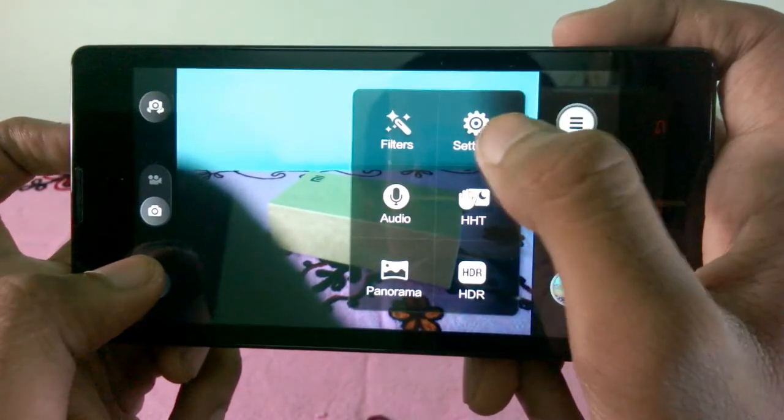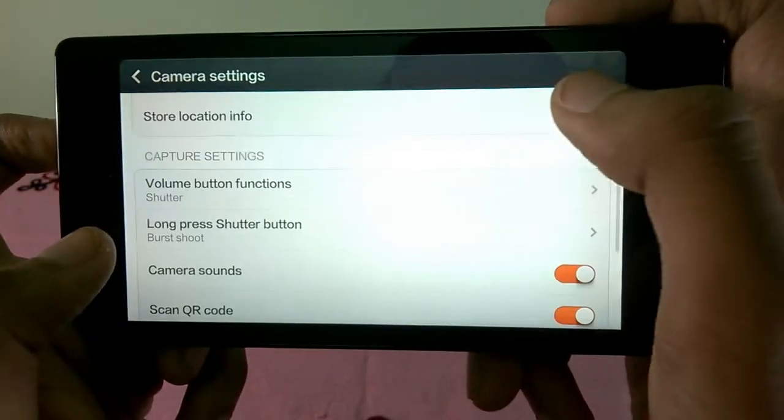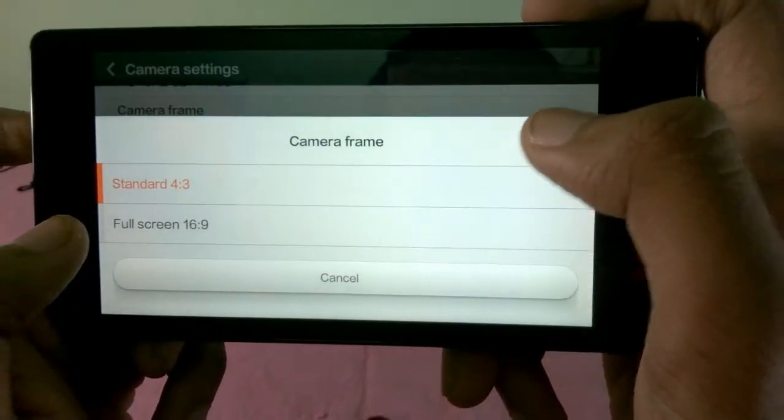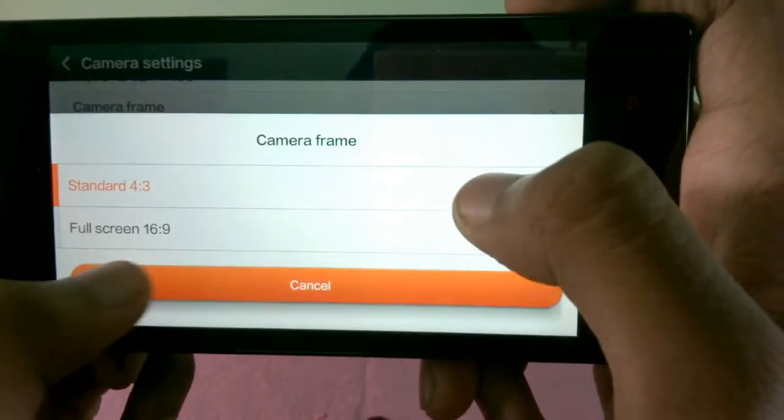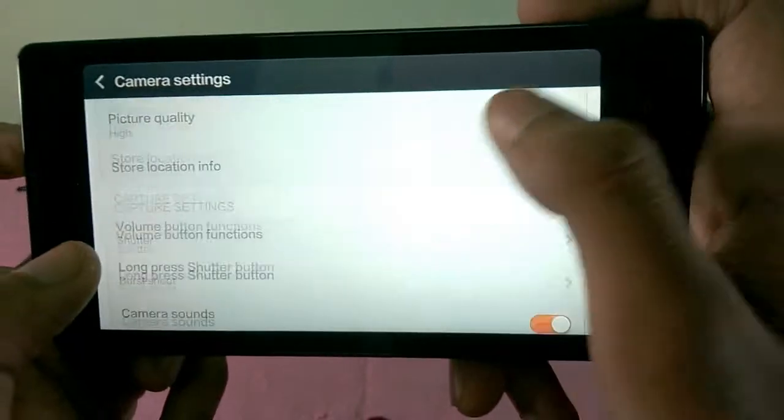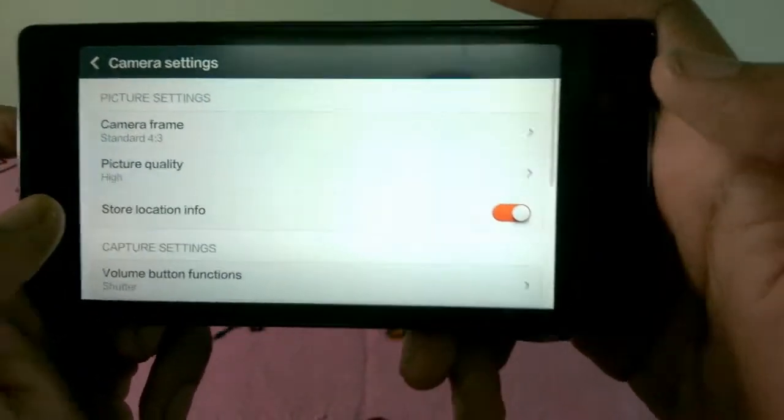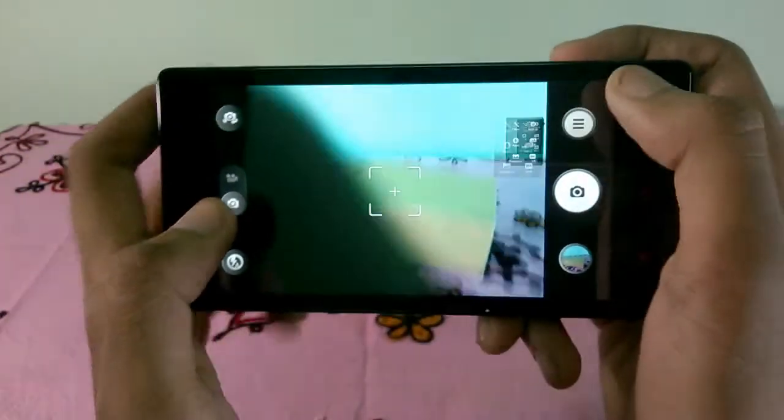We will see the normal settings that you can see in the Xiaomi Mi 3. Picture quality means the 4x3 or 16x9 aspect ratio. Picture quality, set it to high. Some cool nifty features.